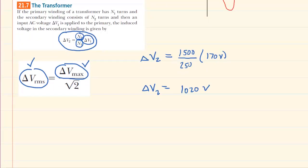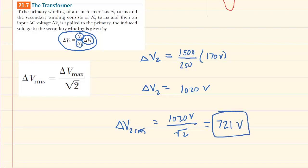Now, we can easily convert that into the RMS by using this equation right here. So we'll basically take the maximum potential difference of 1020 volts and then divide that by the square root of 2. And when we do that, we can see that the RMS potential difference is 721 volts. So this would be the correct answer to the question.